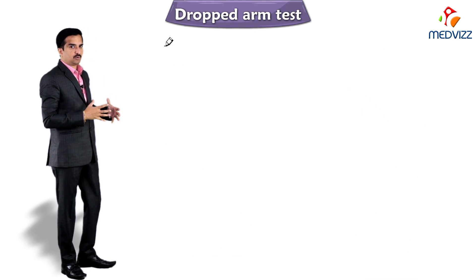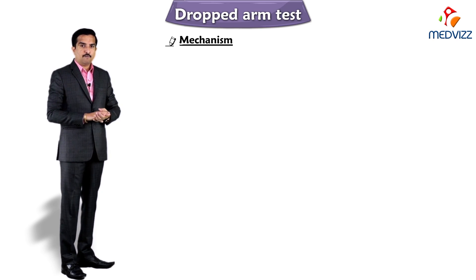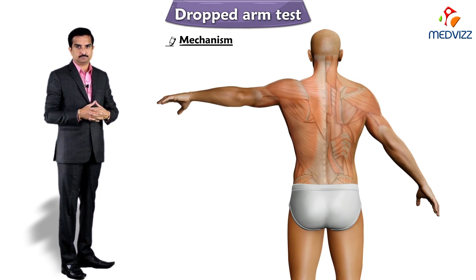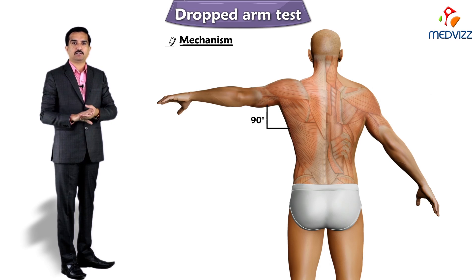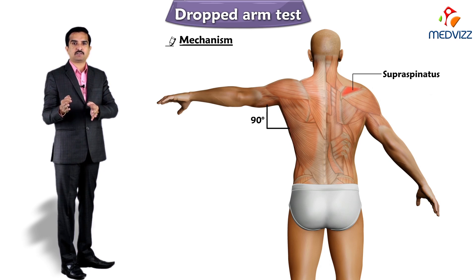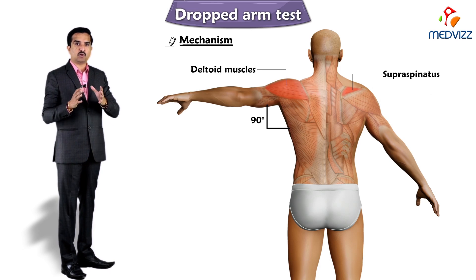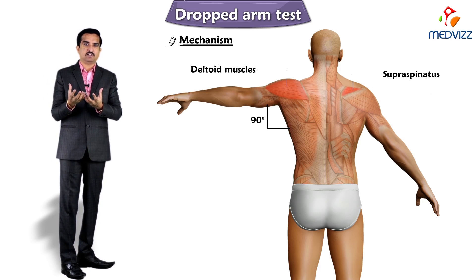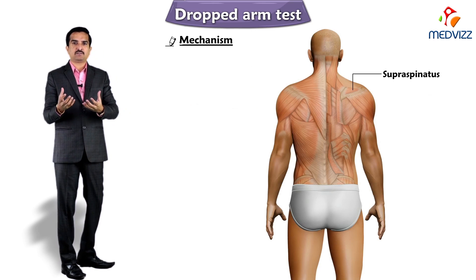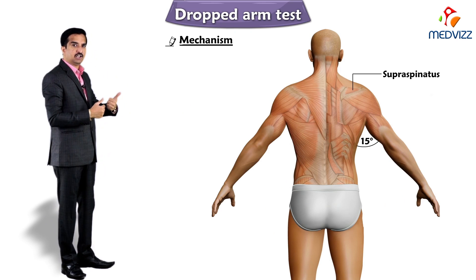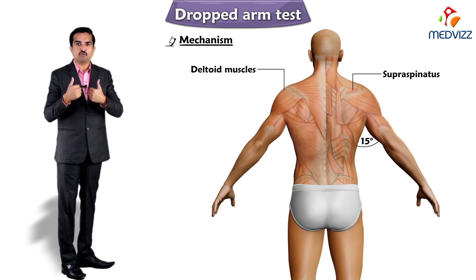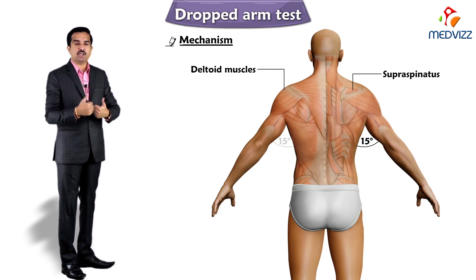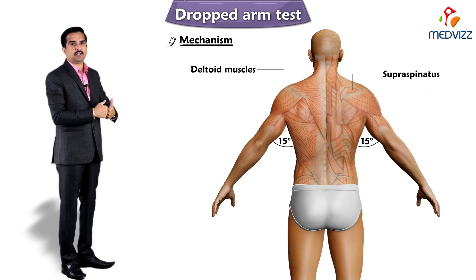Now let us concentrate on the mechanism behind this. Abduction of the arm from 0 to 90 degrees is dependent upon the supraspinatus and deltoid muscles. More precisely, the supraspinatus is responsible for the first 15 degrees of abduction, and the deltoid muscle is responsible for abduction beyond 15 degrees, that is, from 15 to 90 degrees.